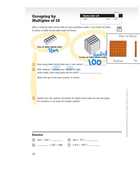And then on number three, it says explain how cartons and boxes for table tennis balls are like the digits for numbers in our base 10 number system.